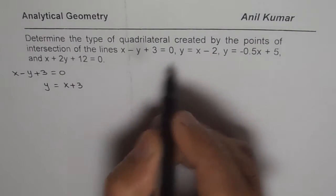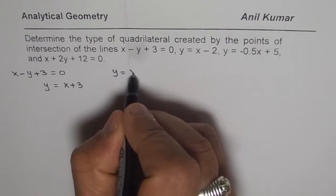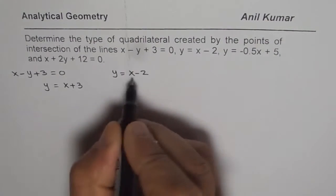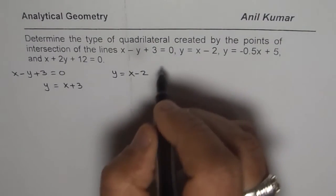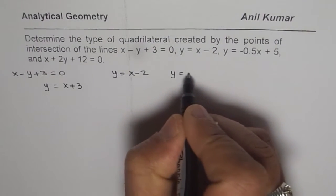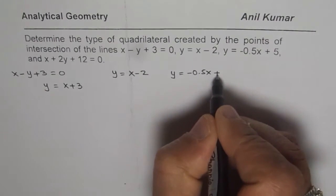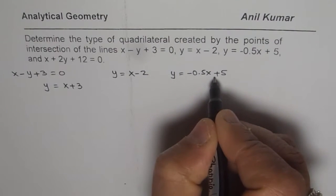The second line here is y equals x minus 2. So it is already in slope-intercept form, we will just keep it as such. The third line is y equals minus 0.5x plus 5, and that is also in slope-intercept form.